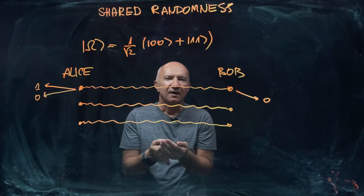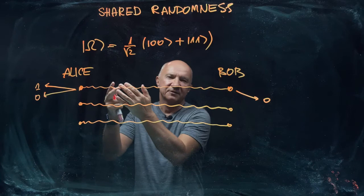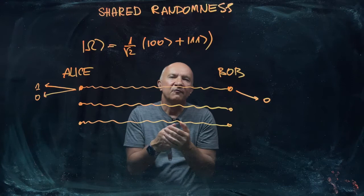Alice doesn't have a choice here. She simply gets a random outcome, be it zero or one. So she has no ability to choose to force the qubit to be in state either zero or one in this particular case.